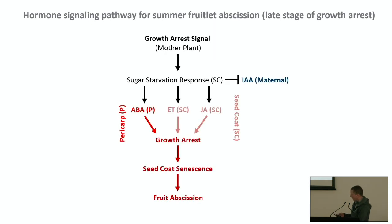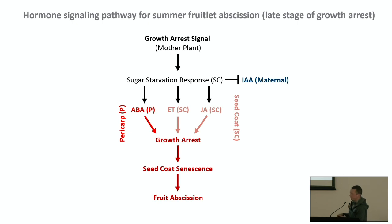We propose the following pathway: the mother plant generates a growth arrest signal that elicits a sugar starvation response in the seed coat. This decreases IAA levels in the maternal tissues and stimulates abscisic acid production in the pericarp, and ethylene and jasmonic acid in the seed coat. Together, this network promotes growth arrest. After growth arrest, ethylene and jasmonic acid drive seed coat senescence, ultimately leading to fruit abscission.